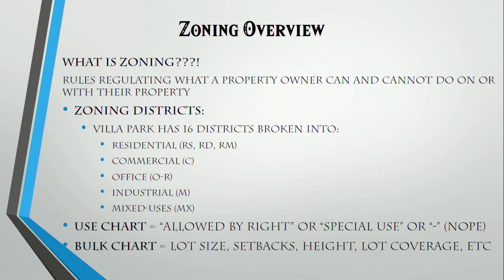First off, what is zoning? Zoning is the rules that regulate what a property owner can or cannot do on or with their property. That is through zoning districts. In our zoning ordinance, which is in our code of ordinances, it outlines a bunch of different districts — Villa Park has 16, broken into residential, commercial, office, industrial, and the MX mixed-use districts. There is also a use chart that lists uses on the left and zoning districts across the top. A black circle means allowed by right, an 'S' means special use, and a dash means you cannot do it in that district — you can't even ask for relief.